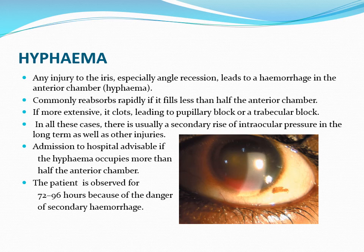Coming to hyphema: hyphema is blood in the anterior chamber. Any injury to the iris, especially angle recession, leads to hemorrhage in the anterior chamber known as hyphema. Hyphema commonly reabsorbs rapidly if it fills less than half the anterior chamber. If it is more extensive, it clots, leading to pupillary block or trabecular block. In all these cases there is usually a secondary rise of intraocular pressure in the long term.